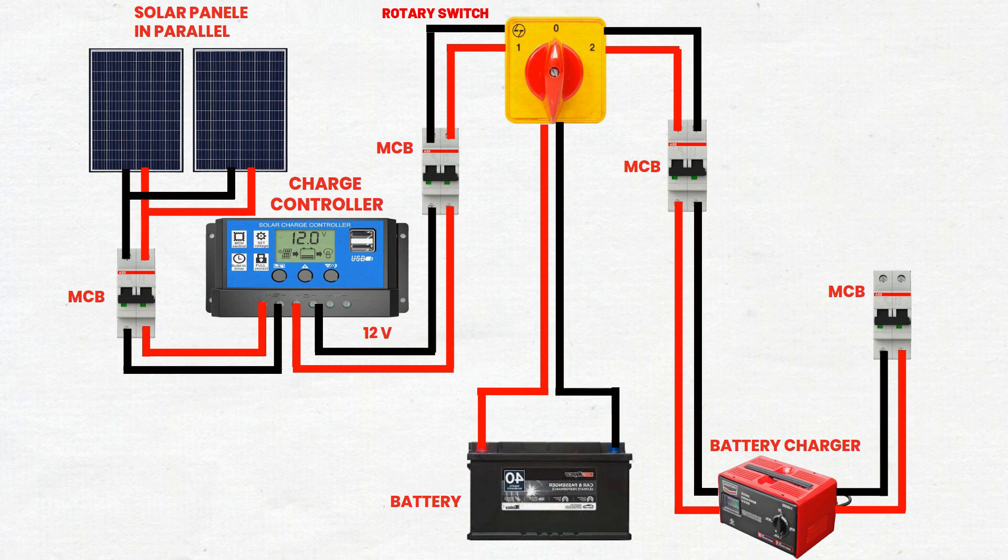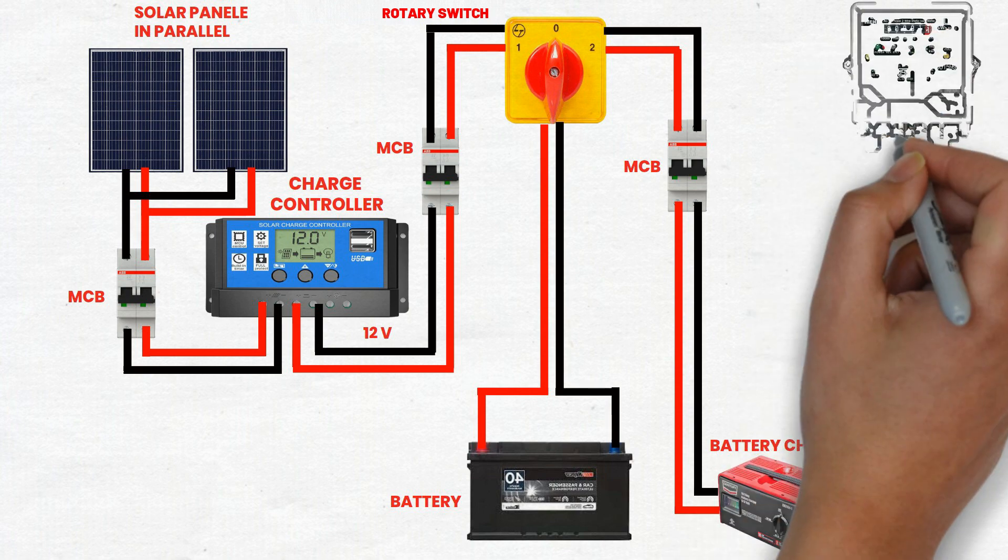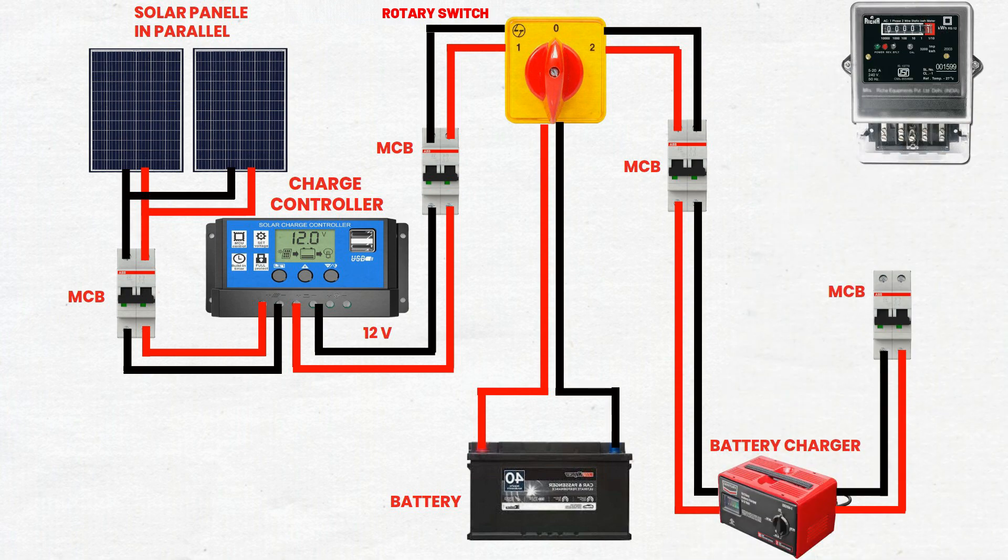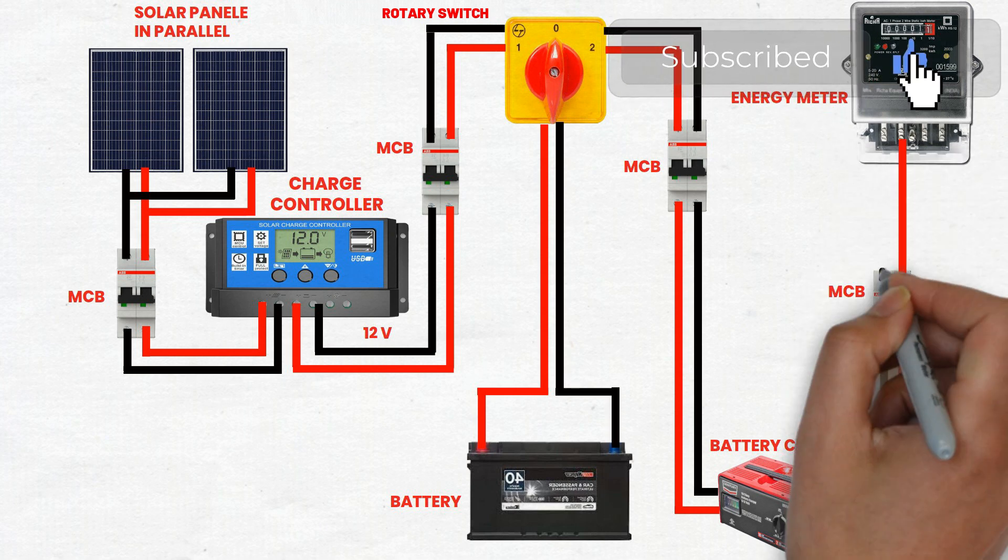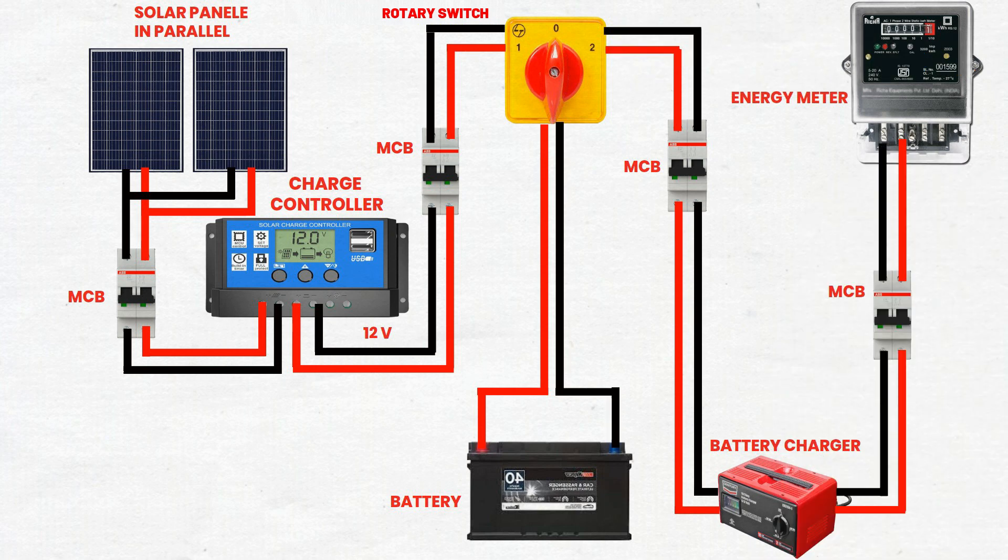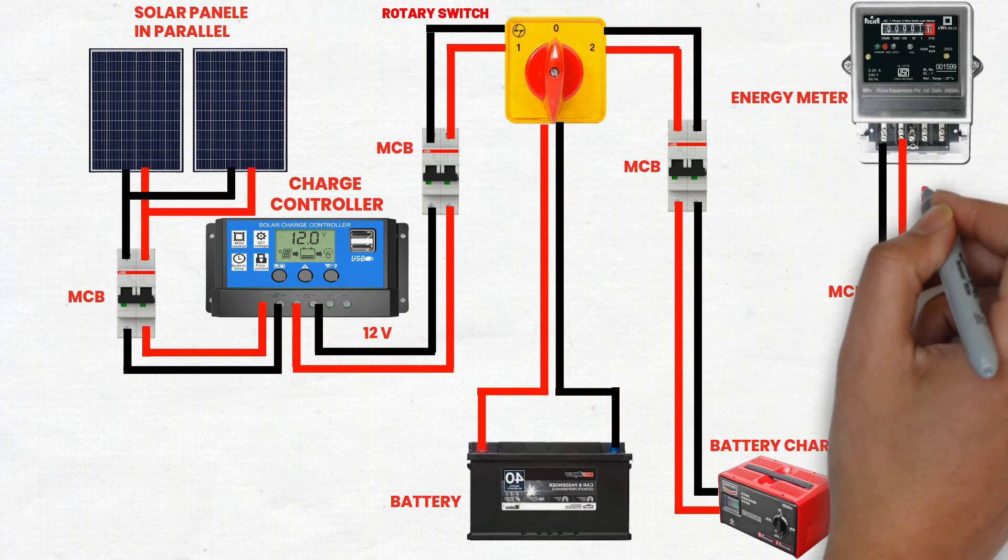Step 9: Connect fourth MCB to energy meter. Energy meter measures the amount of electrical energy consumed or produced. Use cables to connect the output terminals of the fourth MCB to the input terminals of the energy meter. This meter will measure the energy flowing to your load or inverter.